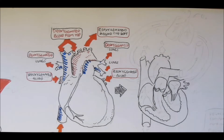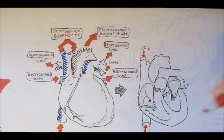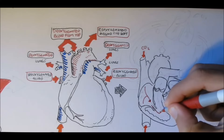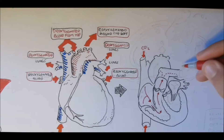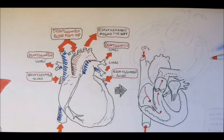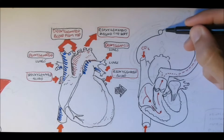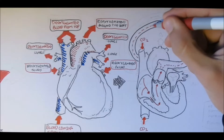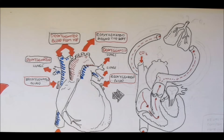The heart works like a double pump. De-oxygenated blood, or blood containing CO2, comes from up here and down here, enters the first chamber, goes down through the second chamber, and is pumped up to the pulmonary arteries towards the lungs — that's the first pump. In the lungs we typically inhale oxygen and exhale CO2 to replenish our blood's low oxygen supply.